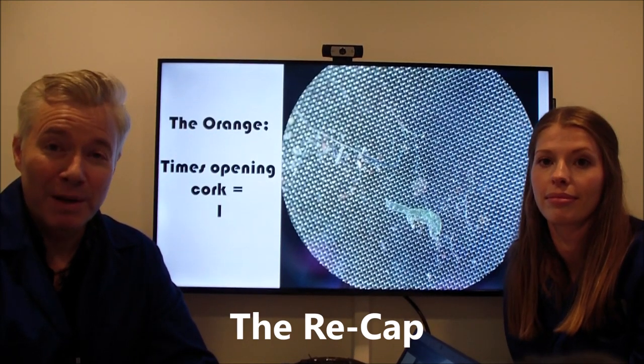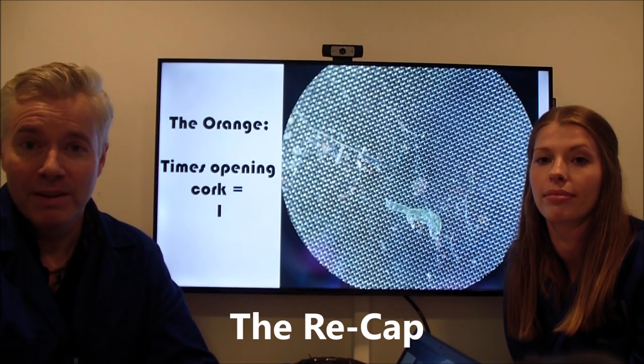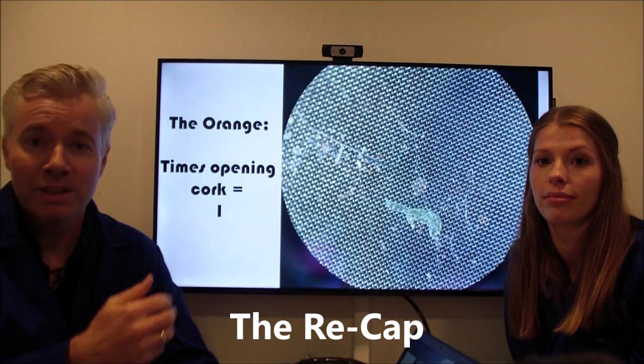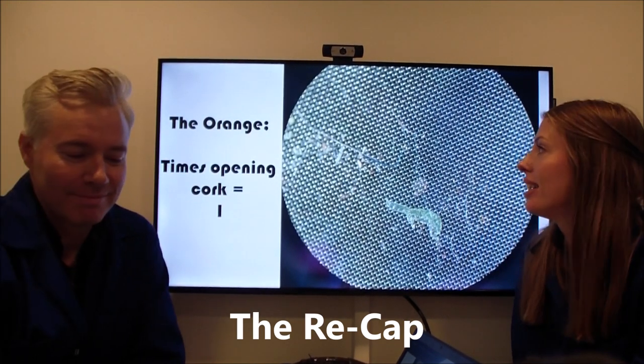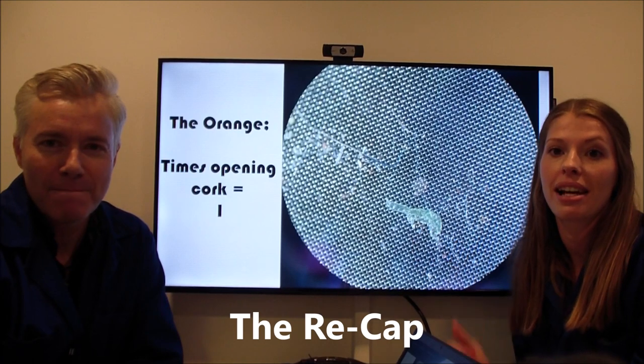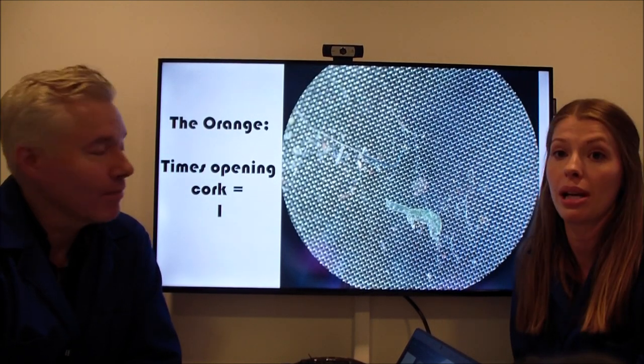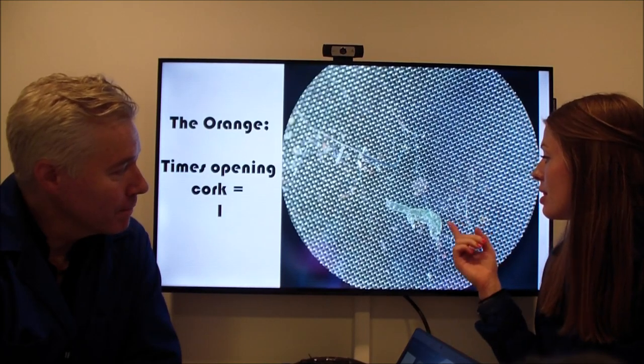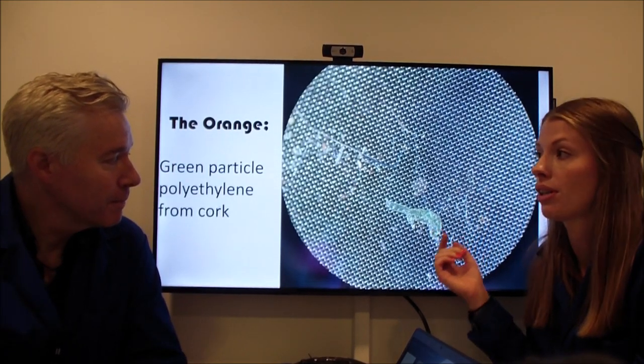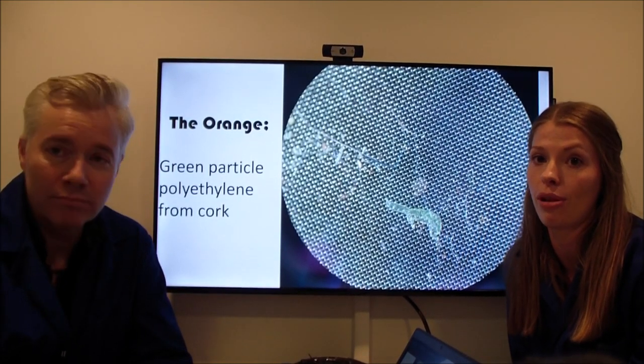Okay, so now we looked at our filter samples with the microscope and the FTIR microscope, and we'll just give you a brief summary of what we found. So this is the orange sample, which we didn't do anything with, but anyway we found plastics in it. For instance, this green polyethylene particle which is probably originating from the cork.